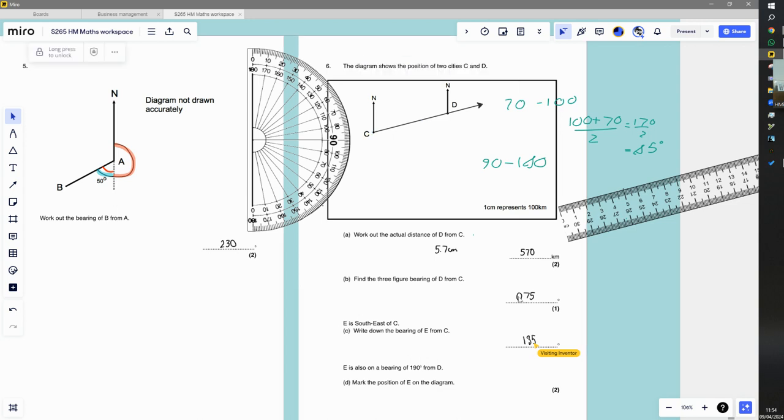Find out the three-figure bearing, and it actually helps you in the question. Look, three figures. So we need to use three figures from of D from C. So in other words, that angle there is 75 degrees. When I just write the angle I don't need to write 075, but that's the angle.